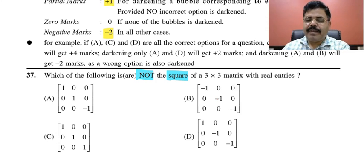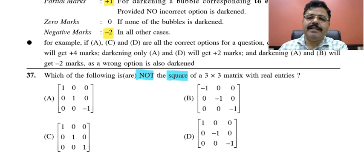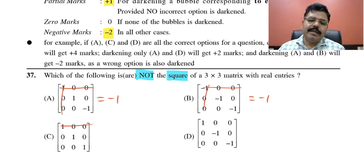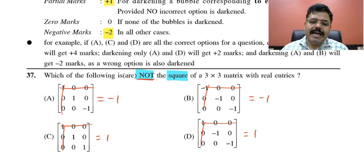So I mean to say, if the determinant of the square of a matrix is positive, then the entries of the matrix whose square is given are real. Here the squares of matrices are given, and we find whether their determinant is positive or not. If you calculate the determinants: the first is −1, the second is also −1, the third is +1, and the fourth is also +1. Two of them have determinant −1 and two have determinant +1. Since the question asks which are NOT real entries, option A and B are the answers, because their determinant is negative, meaning not all entries are real.